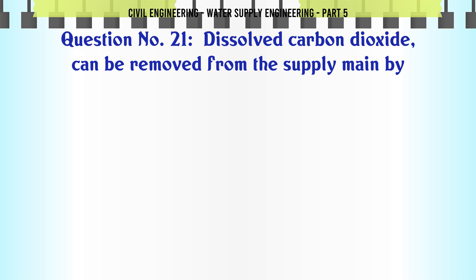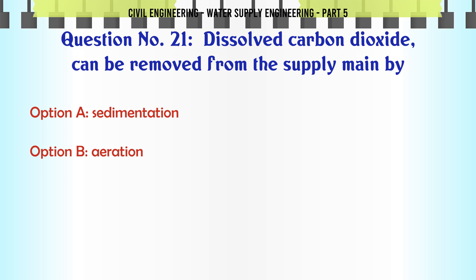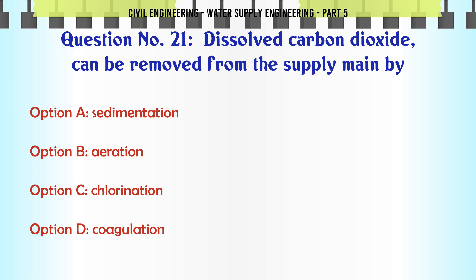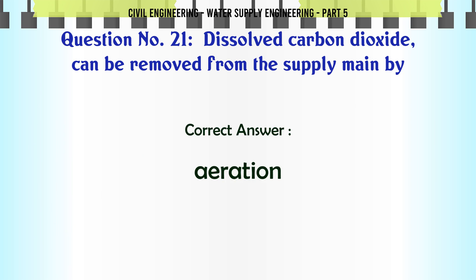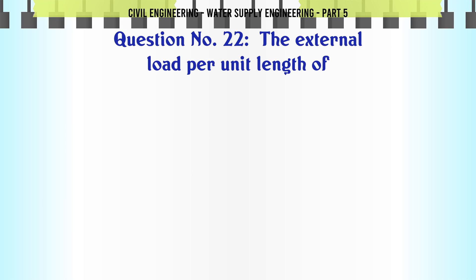Dissolved carbon dioxide can be removed from the supply main by: A. Sedimentation, B. Aeration, C. Chlorination, D. Coagulation. The correct answer is Aeration.